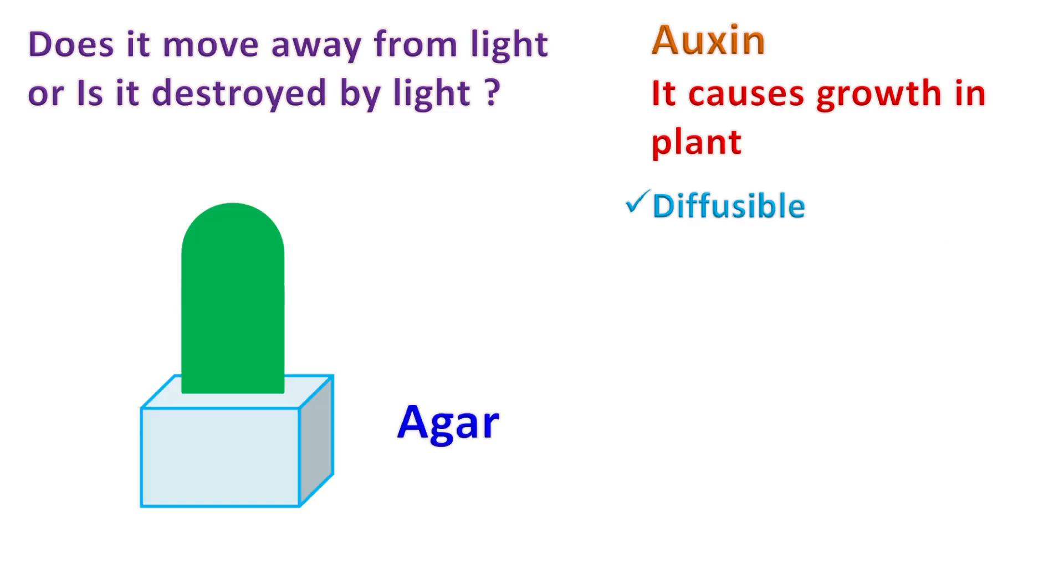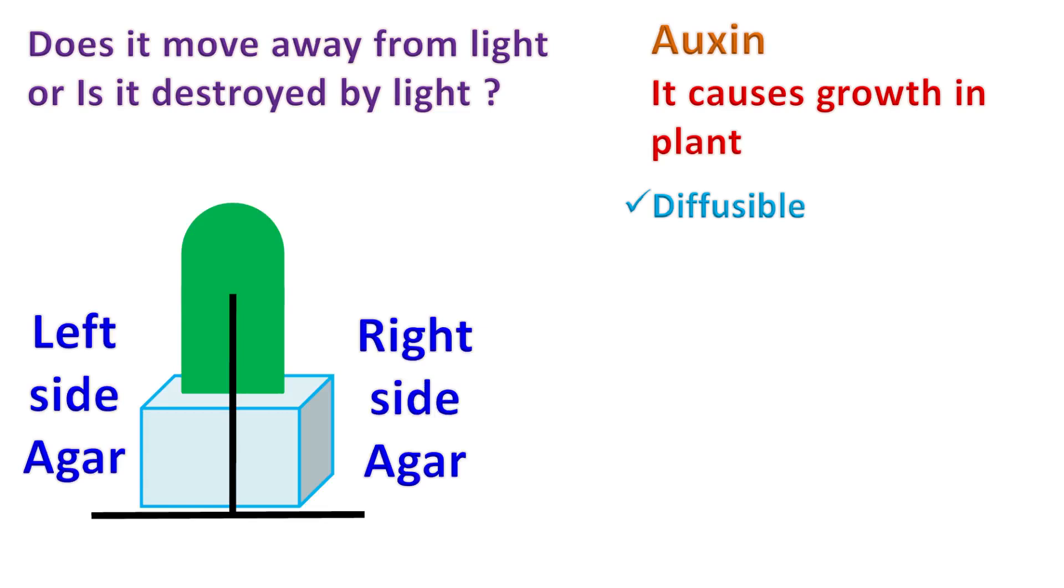The tip of the coleoptile was taken and placed on a block of agar. The block of agar is divided into two parts using an impermeable barrier. The light is then incident on the tip from the right-hand side.